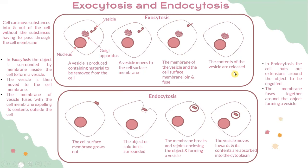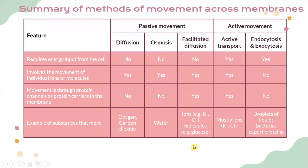In endocytosis, the cell puts out extensions around the object to be engulfed. The membrane fuses together around the object, forming a vesicle. First, the cell surface membrane grows out and surrounds the object or solution. The membrane then breaks and rejoins, enclosing the object and forming a vesicle. Finally, the vesicle moves inward and its contents are absorbed into the cytoplasm.